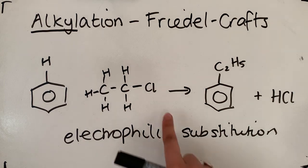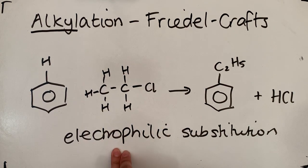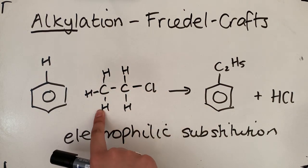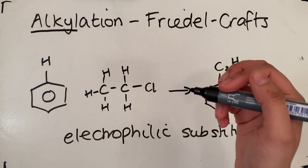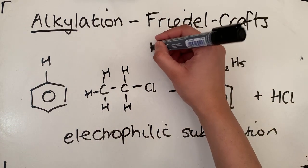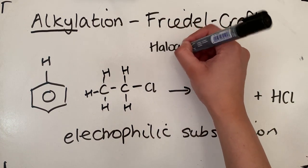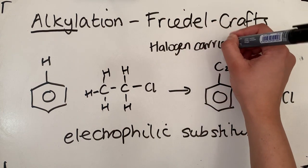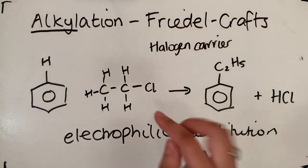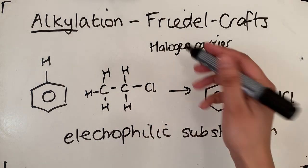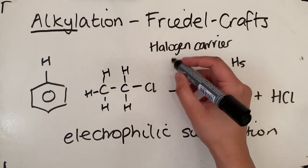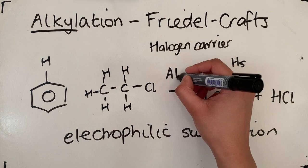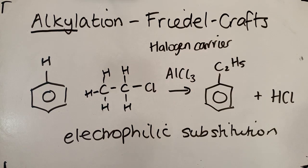So we're going to need to make an electrophile out of this. In order to do that, we need to have a halogen carrier, which is a fancy name for a catalyst. Now in this one, because we've got chloroethane, we need something that's ending in chlorine. So I'm just going to go for AlCl3, which is our aluminium chloride.